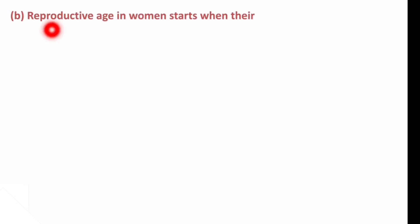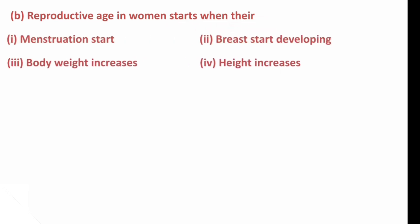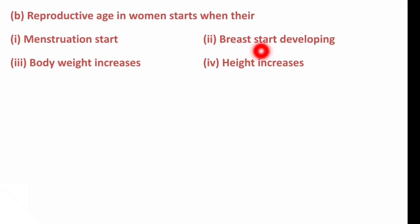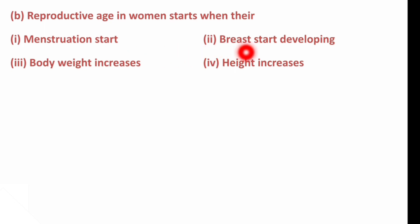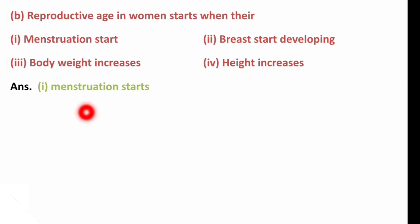Next question: Reproductive age in women starts when — options are: menstruation starts; breasts start developing; body weight increases; or height increases. The answer is: menstruation starts. When menstruation begins, it indicates that reproductive age has started and reproductive maturity has been reached.